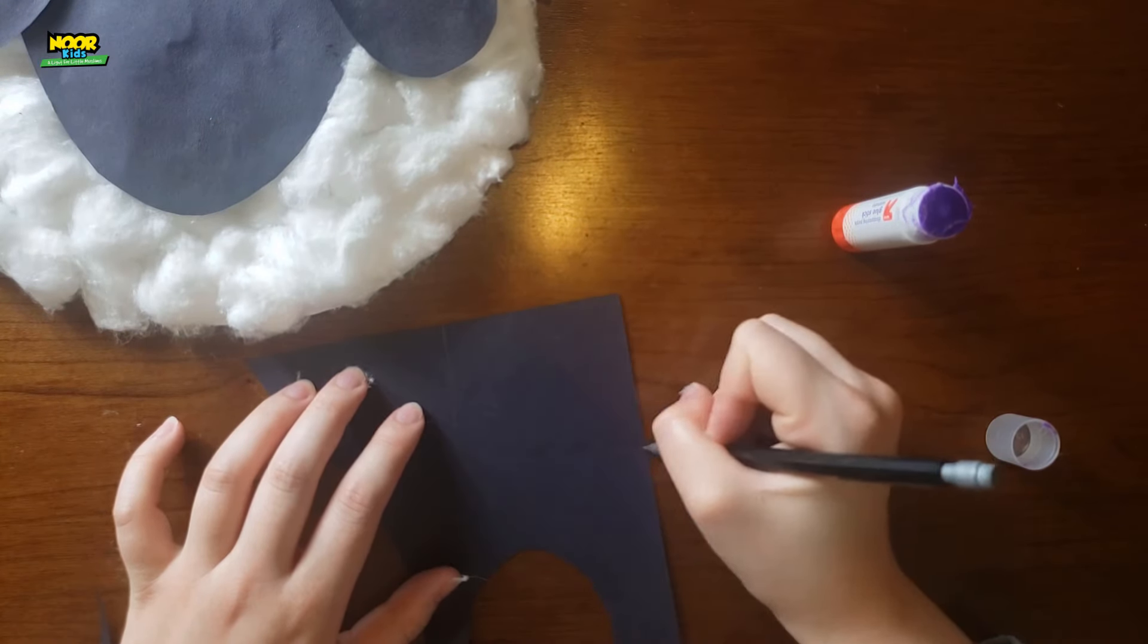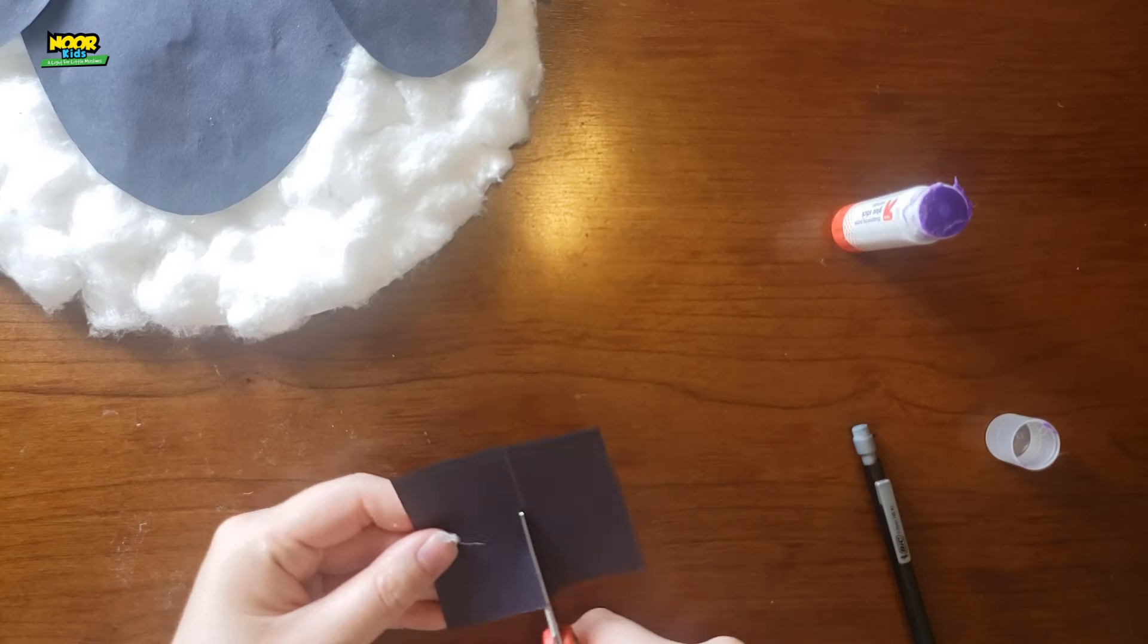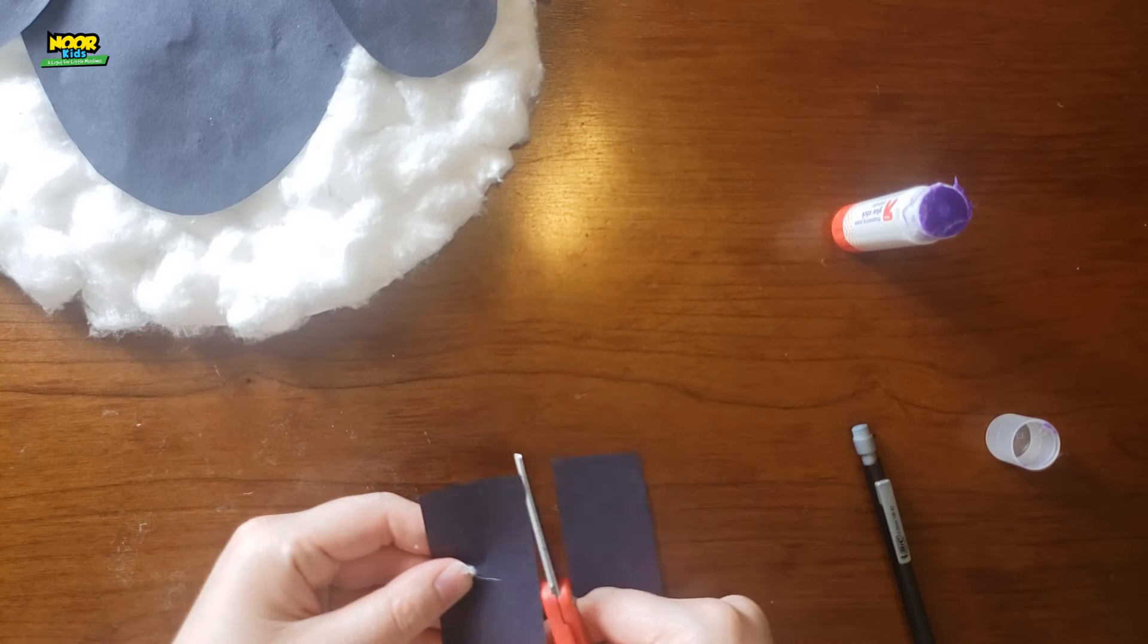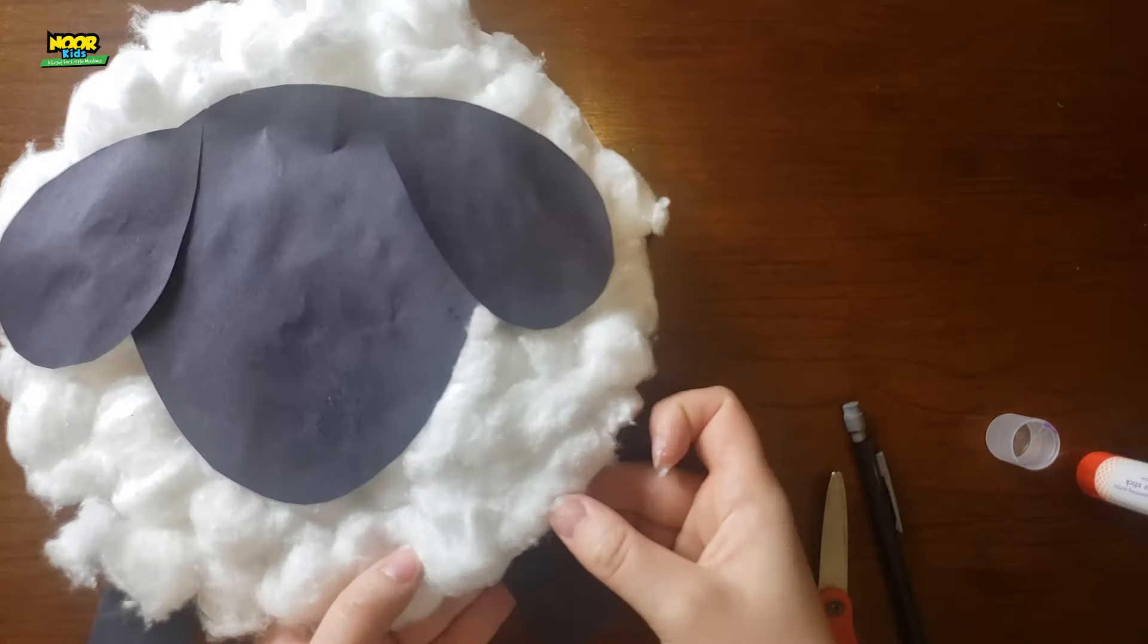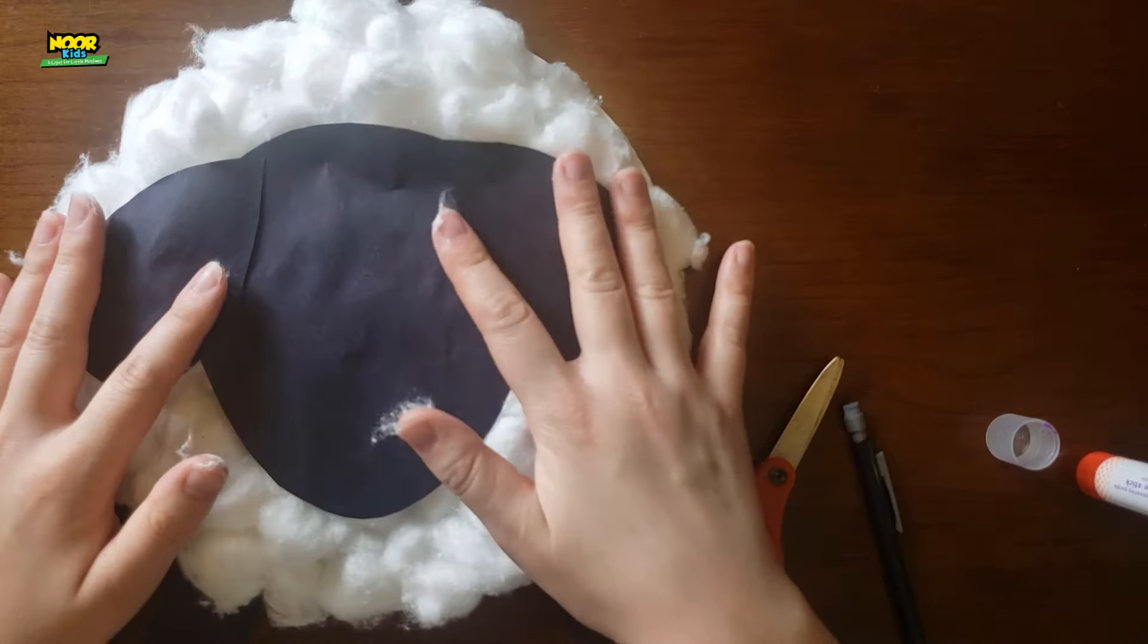Grab the scraps of your black piece of paper and draw a big square. Then cut the square in half. Glue the halves of the square onto the bottom of the paper plate to create the legs.